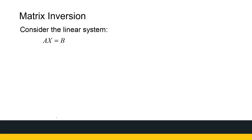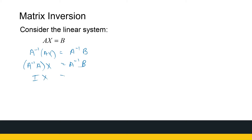If I'm given a system represented by the matrix equation AX = B, and I have the inverse matrix available and multiply both AX and B on the left with the inverse matrix, then since matrix multiplication is associative, A inverse times A just gives me the identity matrix. So X is just A inverse times B.